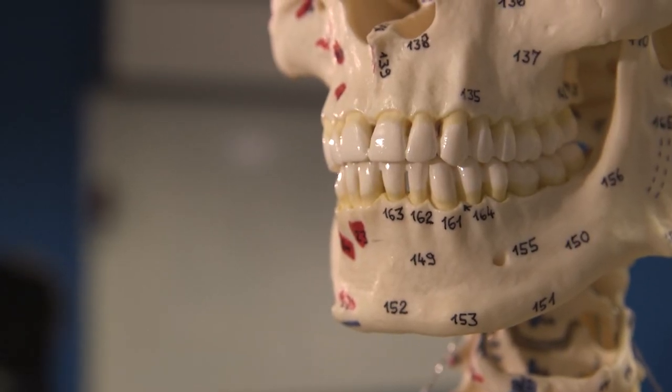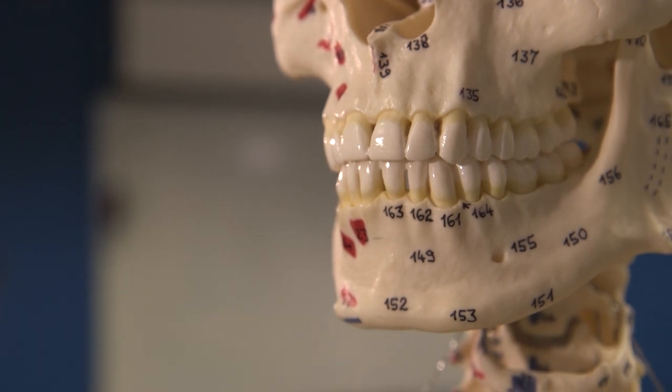It's worth pointing out that some parts of the skeleton actually interact directly with the environment. So your teeth, they actually process and interact with the environment through chewing. You can use them to modify materials. One example is the processing of leather that we find ancient communities do actually using their teeth. They can soften leather and produce something that's more suitable for manufacture.